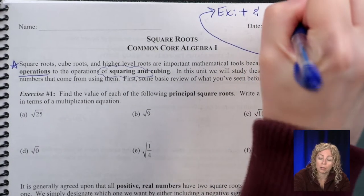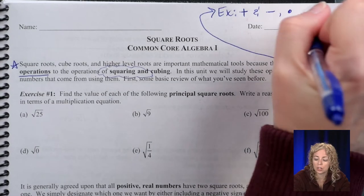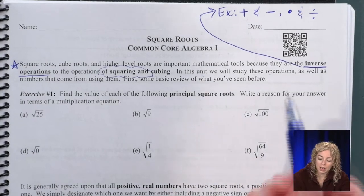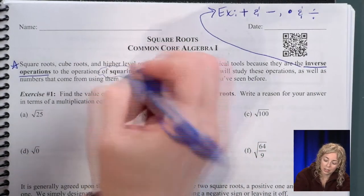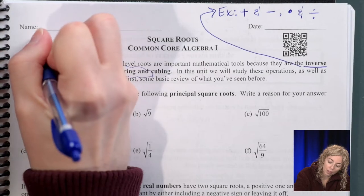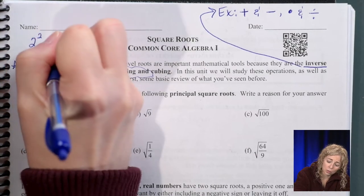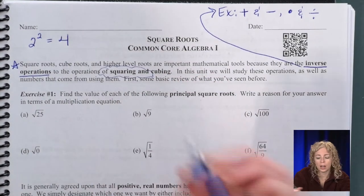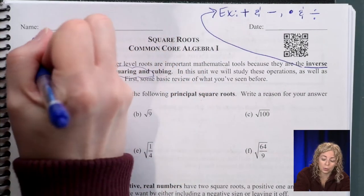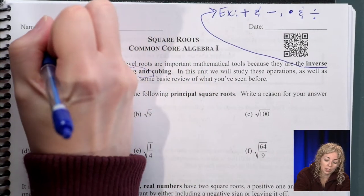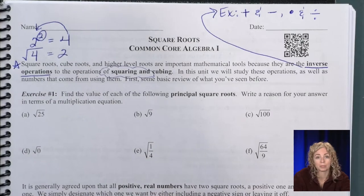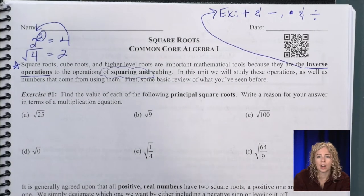For multiplication, the inverse is division — to undo multiplication, we divide. So when we square a number, for example two squared is four, to undo that square we take the square root of four to get two. Squaring and square root are opposite operations.